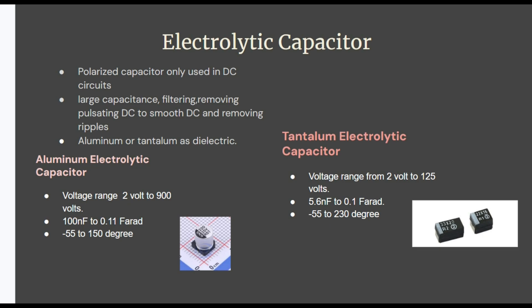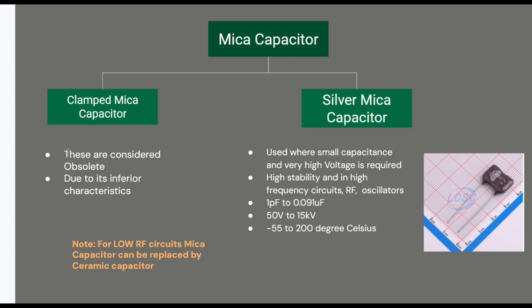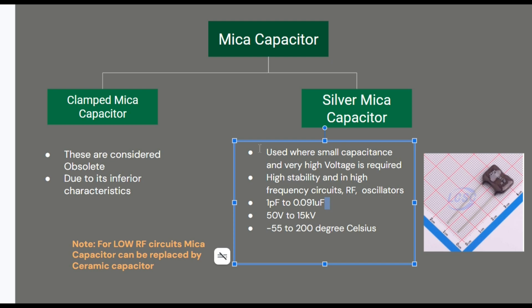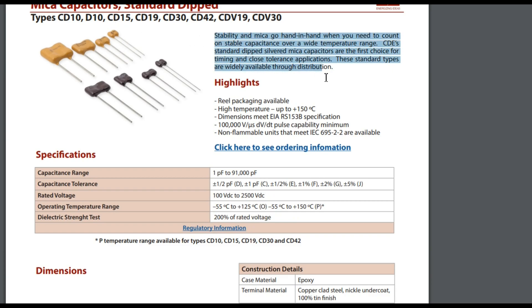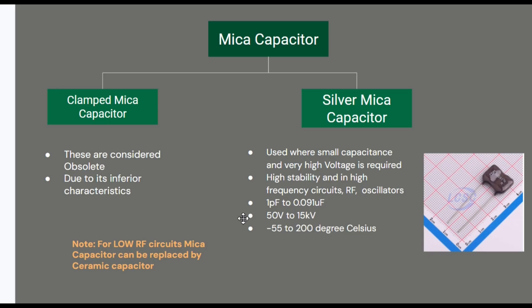Next is the mica capacitor. It has two types: clamped mica capacitor and silver mica capacitor. Clamped mica capacitors are considered obsolete due to their inferior characteristics. Silver mica capacitors are used where small capacitance and very high voltage is required. They provide very high stability and are used in high-frequency, radio frequency, and oscillator circuits. Their capacitance range is from 1 picofarad to 0.091 microfarad, voltage range from 50 volts to 15 kilovolts, and operating temperature from minus 55 to plus 200 degrees Celsius. For low RF circuits, mica capacitors can be replaced by ceramic capacitors.